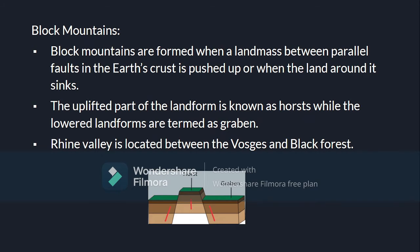The next type is block mountains. Block mountains are formed when a land mass between parallel faults in the earth's crust is pushed up, or when the land around it sinks. The uplifted part of the landform is known as horst, while the lowered landforms are termed as graben.